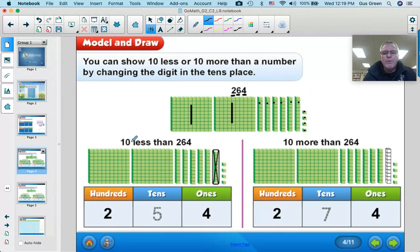So if we want to show 10 less than 264, we could take this same drawing and just cross off 1 ten. So now we have 2 hundreds, but instead of 6 tens, we've got 1, 2, 3, 4, 5, 5 tens. And then we still have the same number of ones. So 10 less than 264 is 254. It's 1 ten less. Instead of 6 tens, we have 5 tens.